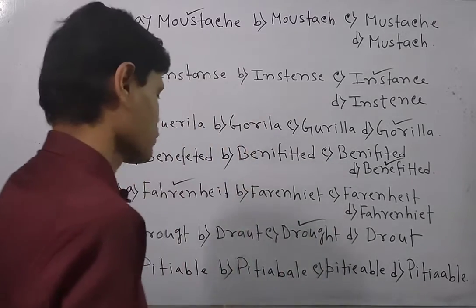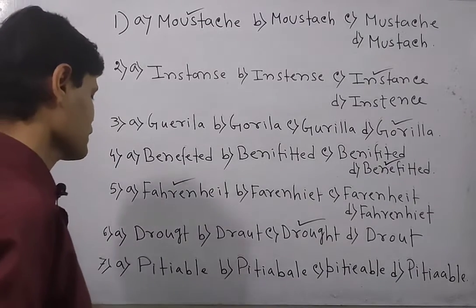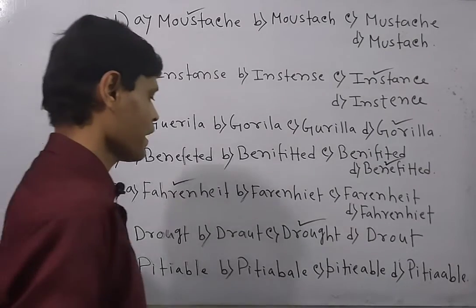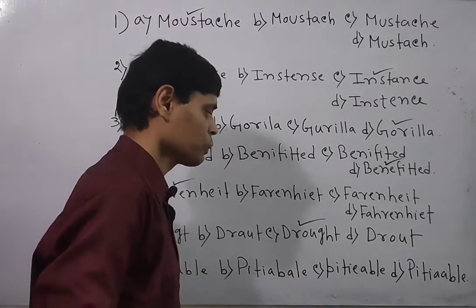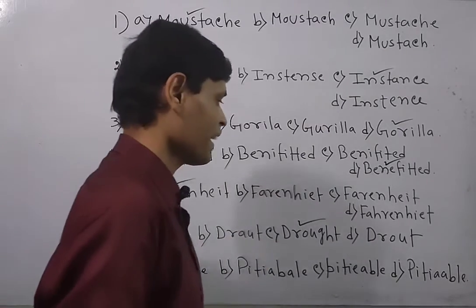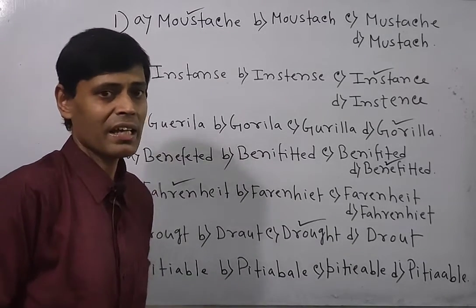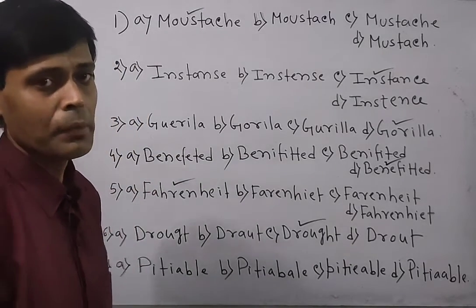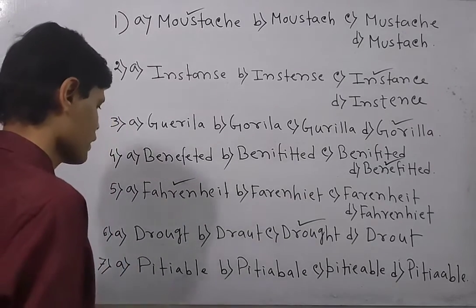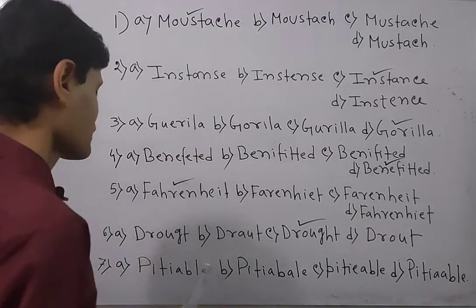Now look at the last question — the word is PITIABLE. First spelling is P-I-T-I-A-B, second is P-I-T-I-A-B-A-L-E, third is P-I-T-I-E-A-B-A-L-E, fourth is another variant. The stress is on the letter A. The exact spelling is P-I-T-I-A-B-L-E. The right spelling is option A — P-I-T-I-A-B-L-E — so all others are out and this will be the answer.